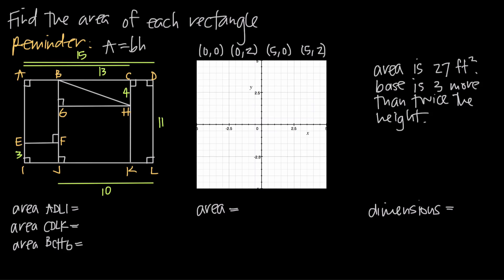In this video we're talking about some of the different ways we're going to be asked to find the area of a rectangle. Remember that a rectangle is just a specific type of quadrilateral, a four-sided figure, where each of the four interior angles are 90 degrees.